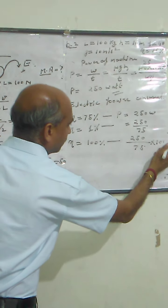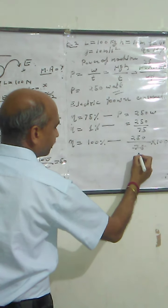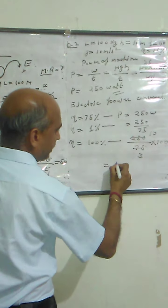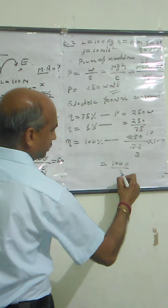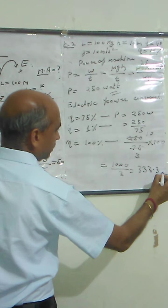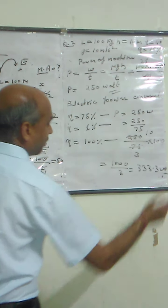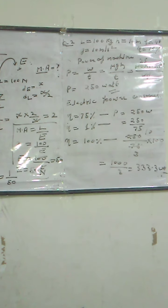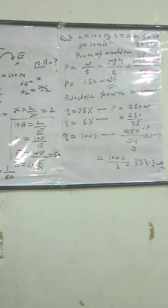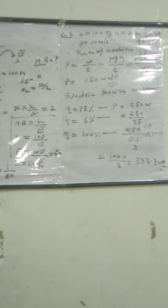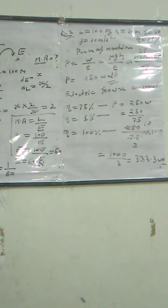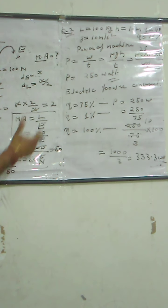Solving 250 into 100 divided by 75 — simplifying, we get 1000 upon 3, which equals approximately 333.3 Watt. So the power consumed by the machine is 333.3 Watt, while the output is 250 Watt. This is a different type of question, so take note of this approach.